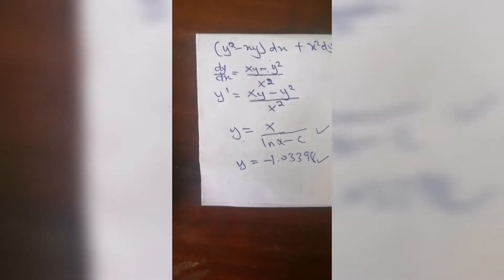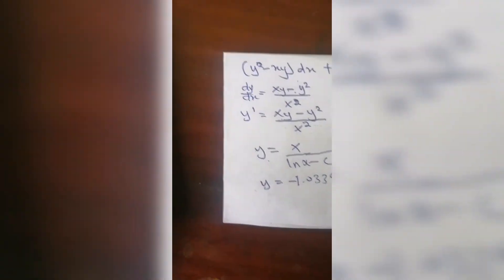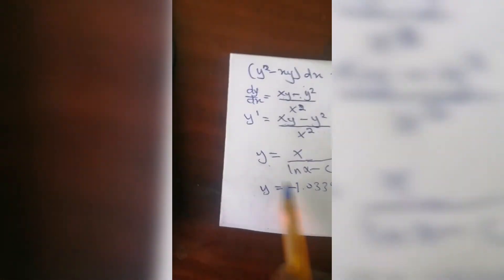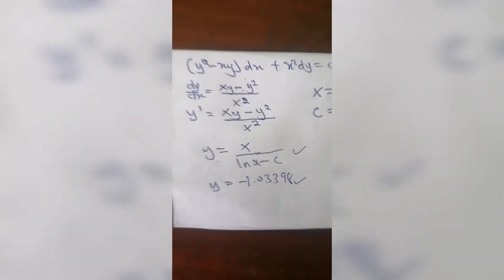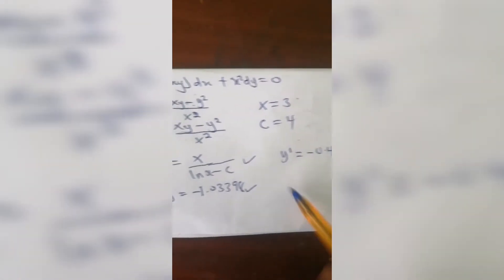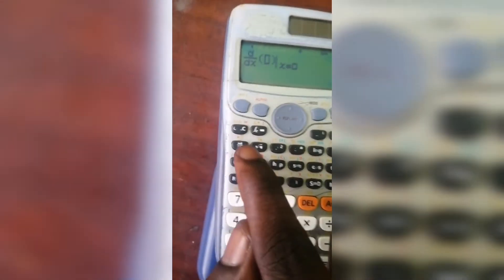When we differentiate the answer, we should get y' to be the same as this. We are going to differentiate the answer. When you differentiate and put x equals 3 and c equals 4 inside, you should get y' to be this. We're going to put in x over (ln x - c).